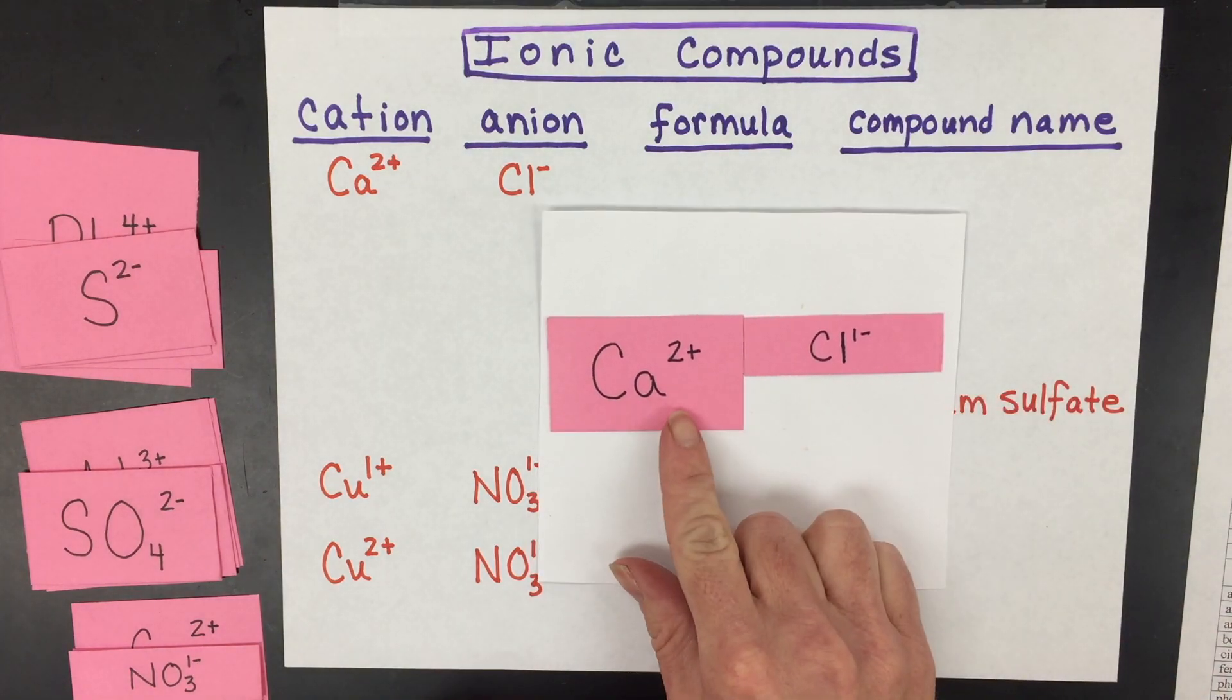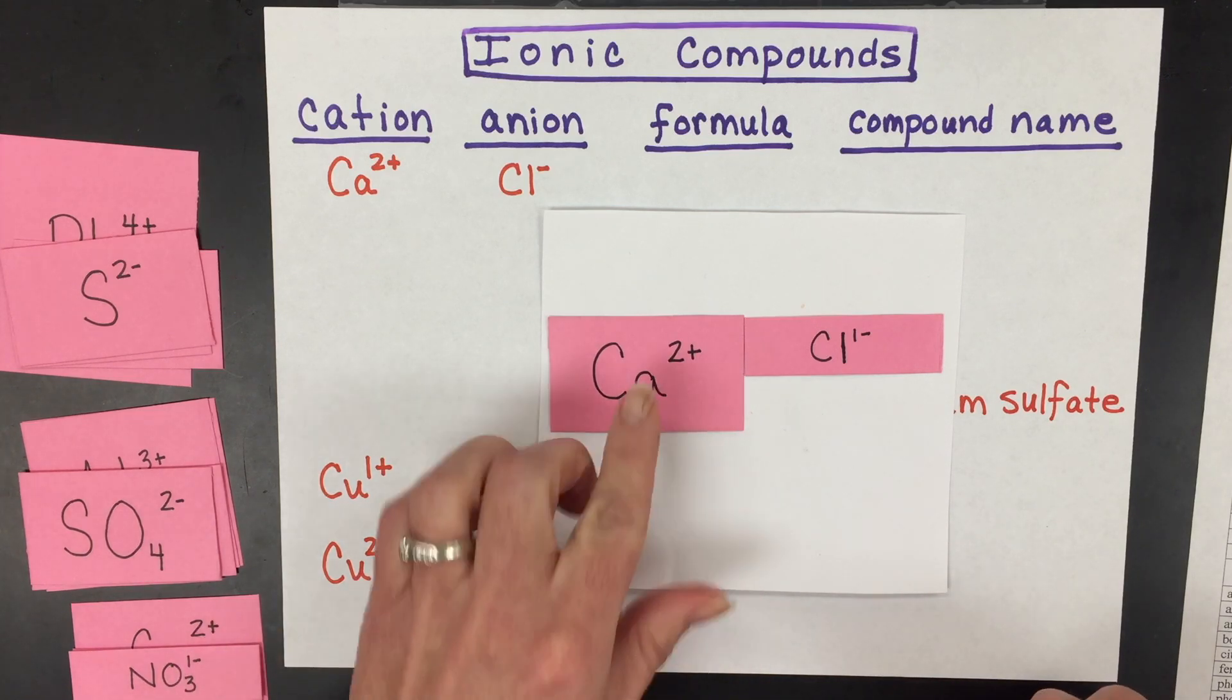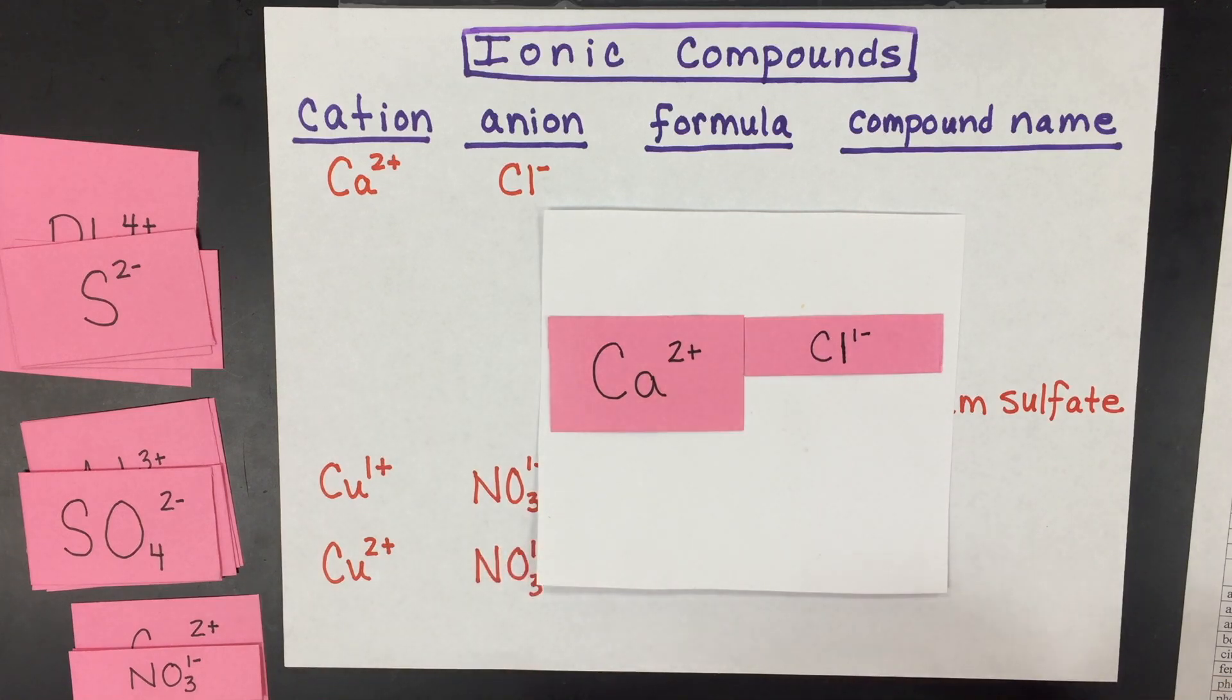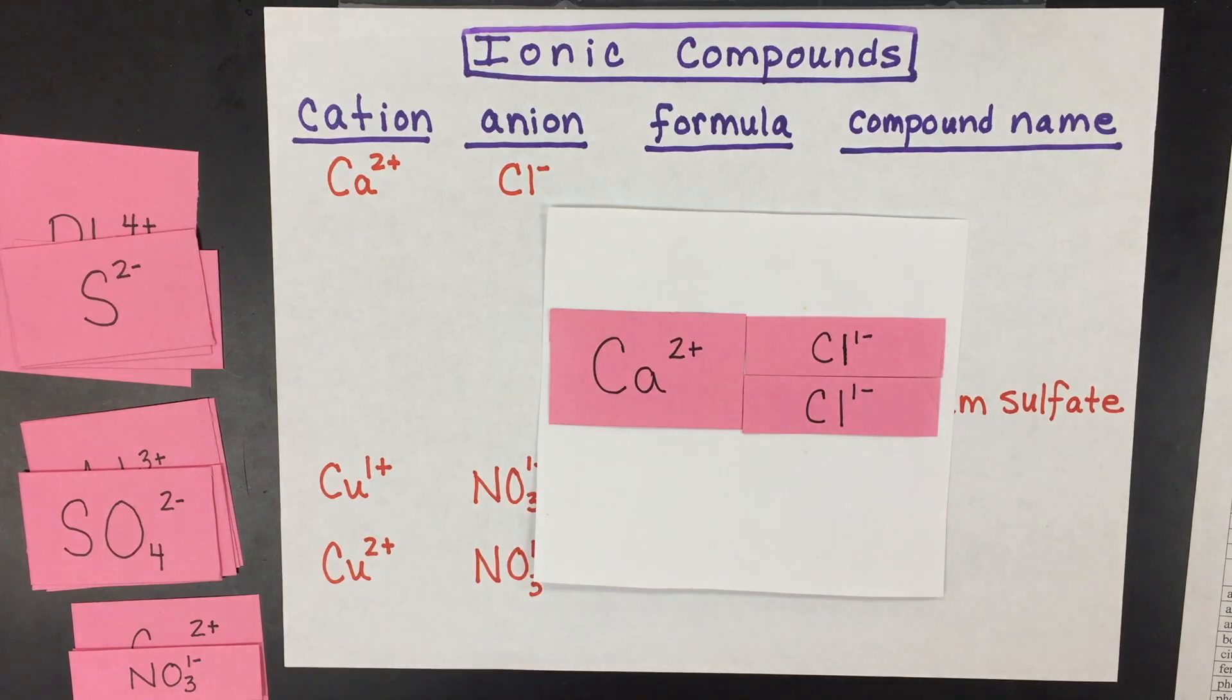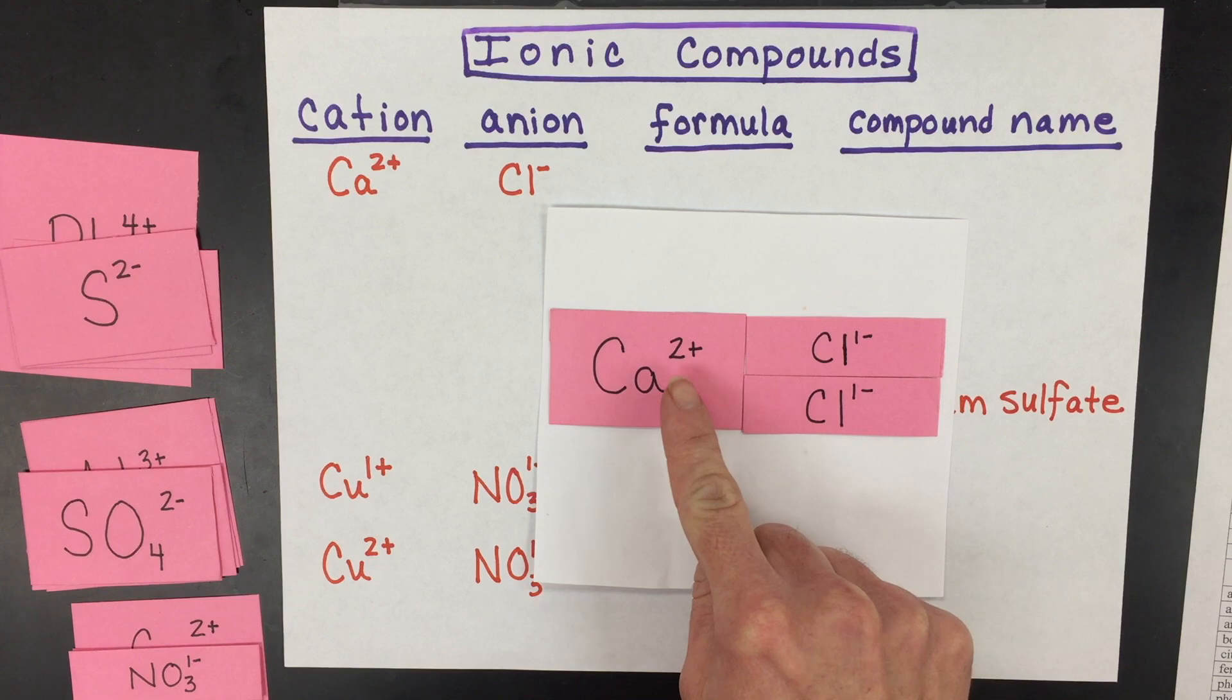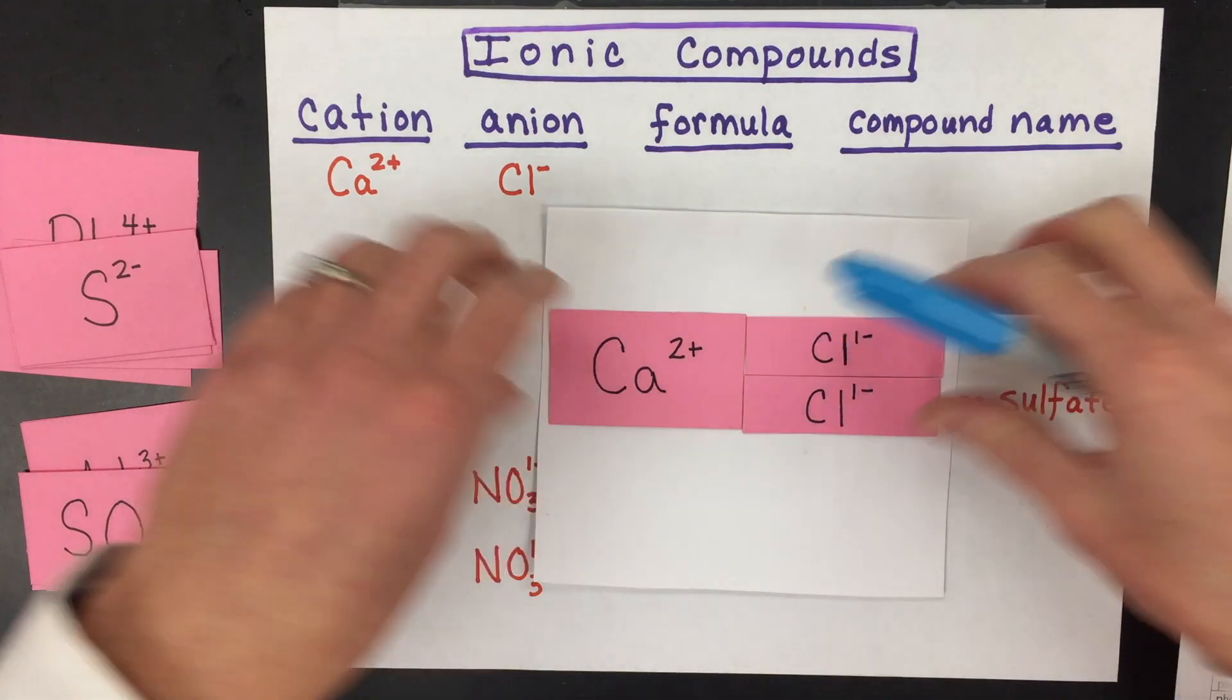So for every one calcium ion, one chloride ion will not equal zero. You'll have an extra plus charge. So two plus plus one minus would not equal zero, it equal one plus. So you're going to need a second chloride ion so that you have two negative charges total plus a two plus charge with the one calcium, and that would give you a net charge of zero.